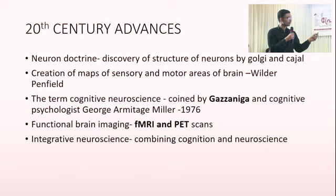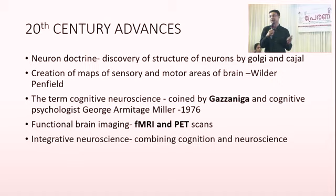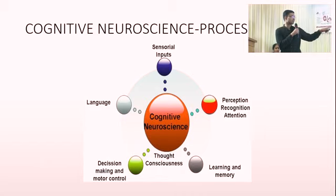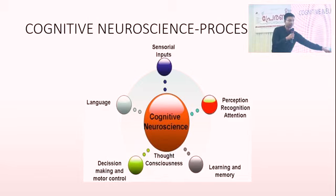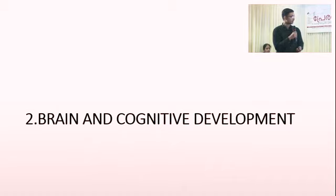In the 20th century came the advent of the functional MRI and functional neuroimaging, and now cognitive neurology has become a very vast subject. It has multiple inputs like sensory input, language, thought, learning and perception. All these together form the core subject of cognitive neurology, and this is the basis of all pattern formation in the brain.